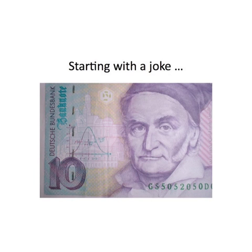So here's the joke, and actually before I start the joke I've got to tell you some mathematics because it's a mathematical joke. It's a very famous piece of mathematics, so famous it used to appear on German banknotes. It's the bell-shaped curve, sometimes called a normal distribution, sometimes called a Gaussian, named in honour of Carl Friedrich Gauss, who is a very, very great mathematician who did a lot of work associated with this curve.